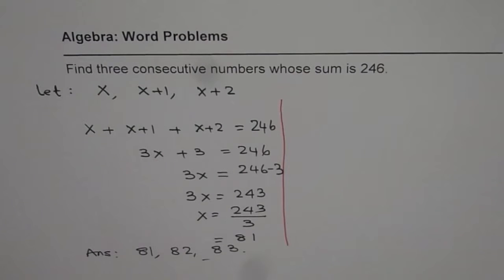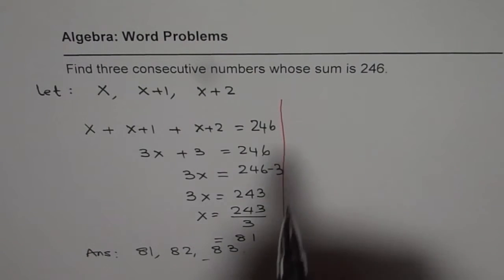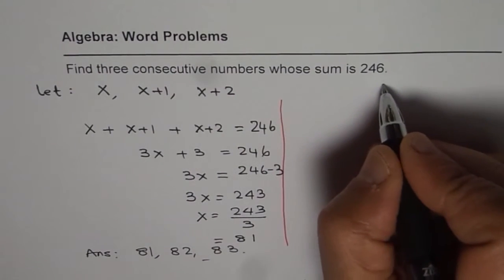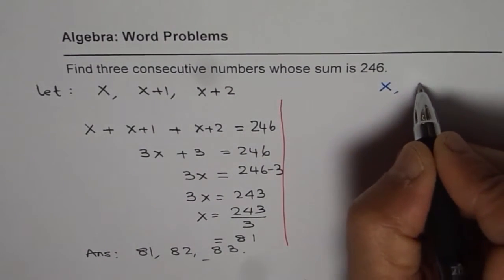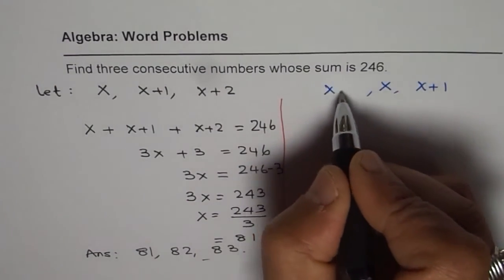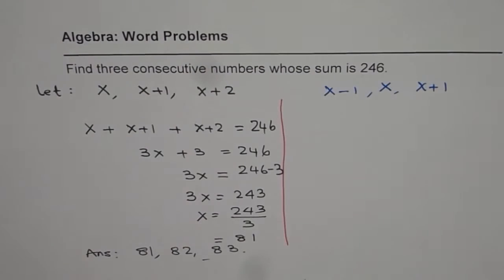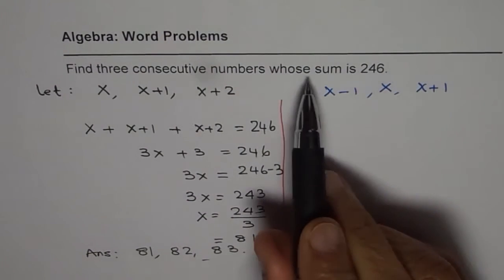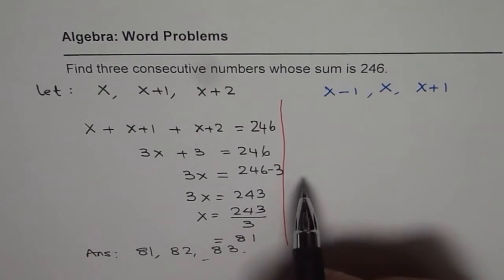Now, here is an alternate solution. When we talk about three consecutive numbers, we can also think like this. Let one number be x, the other one will be x plus 1, and the number before it x minus 1. How about that? These are also consecutive numbers but they help us solve the same question in fewer steps.